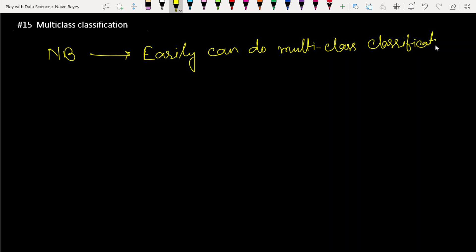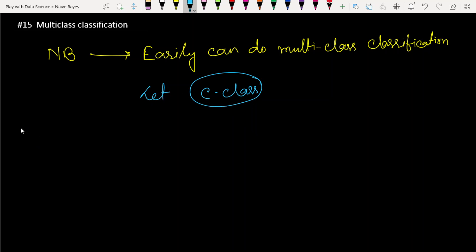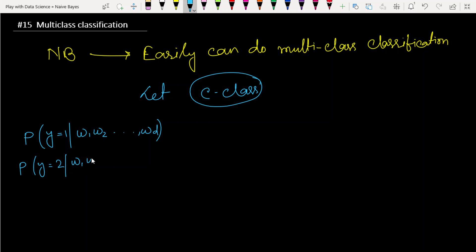The main idea is that at the end of the day, we compute the probability for each class. Suppose we want to classify C classes. For a given data point x_i with features w1 through wd, we calculate the probability for class 1, class 2, and so on up to class C.